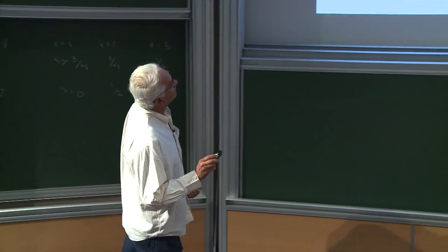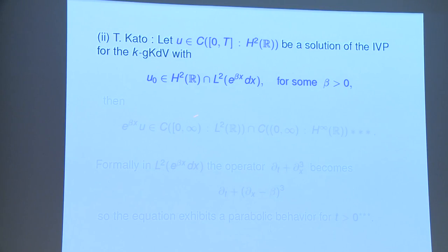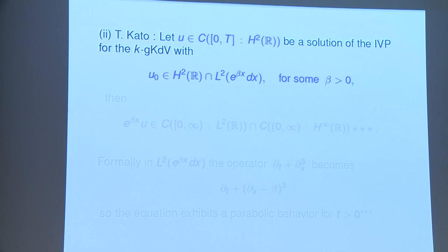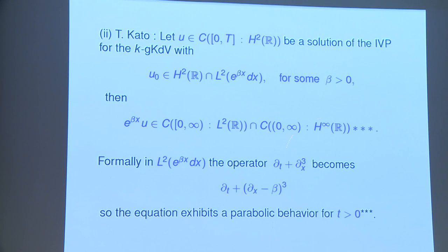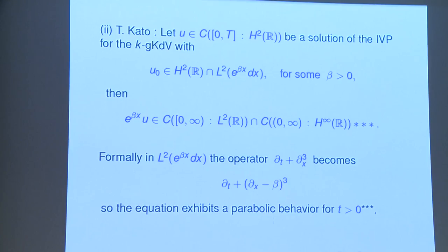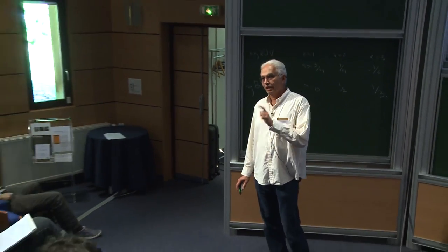In the non-symmetric case, there is a result of Kato: suppose you have enough derivatives (Kato needed two) and exponential decay to the right; then you preserve the exponential decay for positive time — you become C-infinity automatically. This is a kind of parabolic behavior. Why? Because if you consider this operator in the relevant space, it contains the heat equation inside. I would say that singularities run fast if they don't get suppressed, and that statement is not true if you don't quantify.